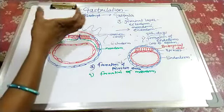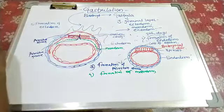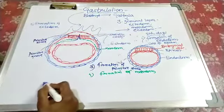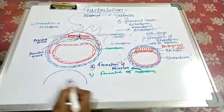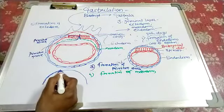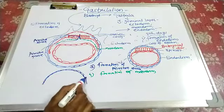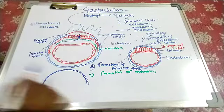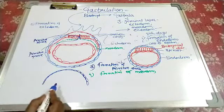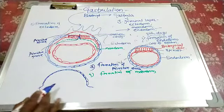This is an amniogenic cell that forms the amniotic cavity, which provides additional support and protection to the developing embryo. This structure is known as the amniotic cycle.